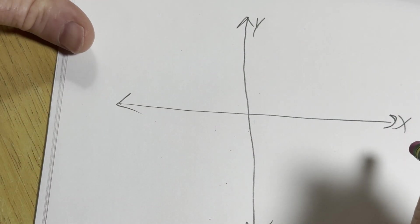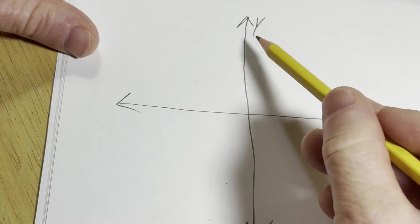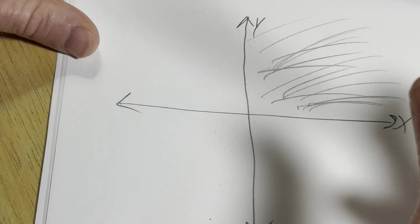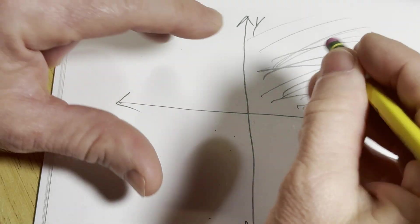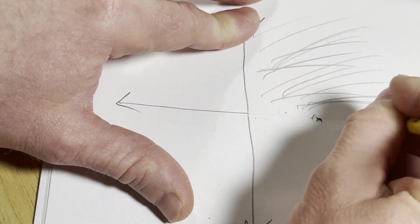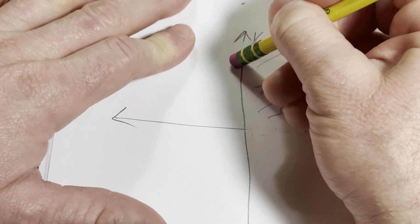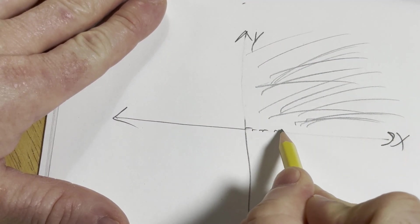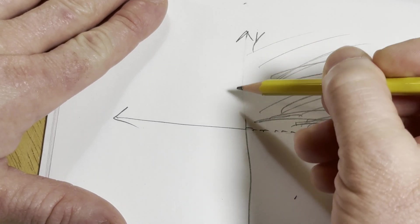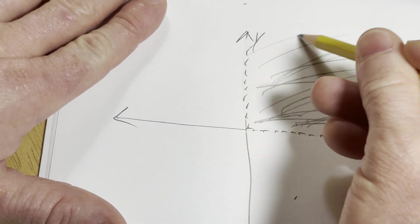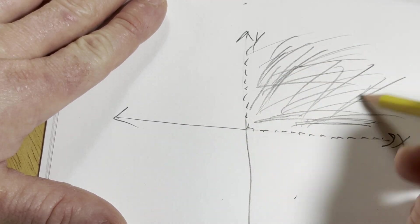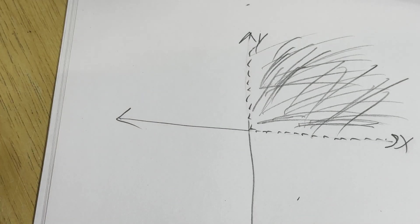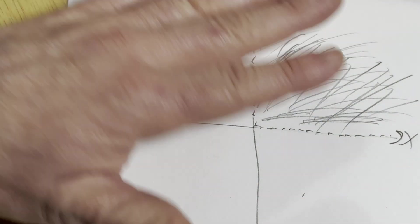And we want to just do the first quadrant, so all of this. But we want to exclude the x-axis and the y-axis. So we're not going to include the x-axis. And we're not going to include the y-axis. We're not going to include any of these. So we're just going to look at this set here. And the claim is that this is an open set.